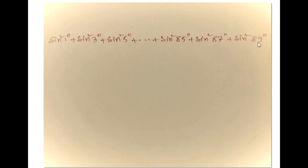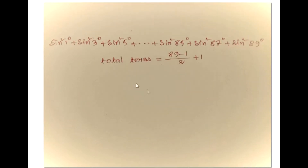Here also 1 degree plus 89 degree is 90 degree, 3 degree plus 87 degree is 90 degree and so on. So here we apply this rule.